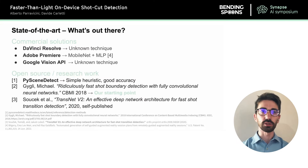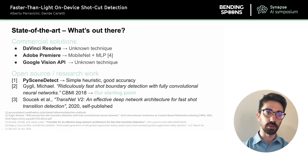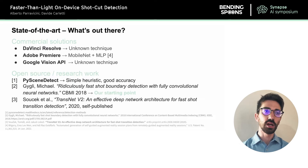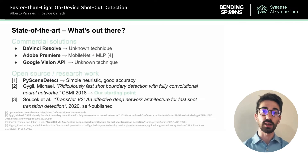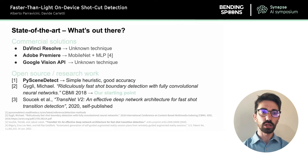We can divide existing methods into two categories: commercial solutions, which are readily available but whose implementation details are not public, and open-source or research work we can build upon. Specifically, PySceneDetect is a well-known Python library that looks at color differences between frames. 'Ridiculously Fast Shot Boundary Detection with Fully Convolutional Neural Networks' is a 2018 paper proposing a simple but fast model for shot cut detection, which we took as a starting point. Finally, TransNet is a model proposed in 2020 which is much more complex but provides state-of-the-art results.